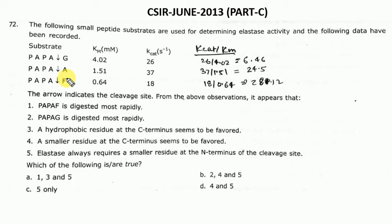Option 5 states that elastases always require smaller residues at the N-terminus of the cleavage site. P stands for Proline. Proline is a smaller, cyclic amino acid, and it favors the N-terminus for elastase. So options 1, 3, and 5 are correct. If you know one or two options clearly, you can solve the questions. The answer is options 1, 3, and 5.